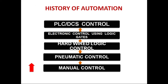Now, talking about the history of automation from bottom to top: first there was manual control, which is not automation. Then there was pneumatic control, where the process was controlled through air pressure variations. Then came hardware logic control, which is based on relays, contactors, hardware timers, and hardware counters — involving a large number of wires, which was also not good enough.